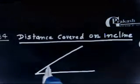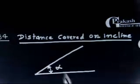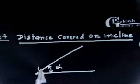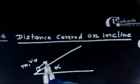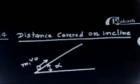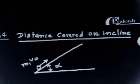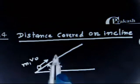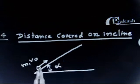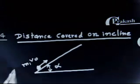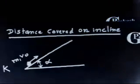This is the inclined plane. It makes an angle alpha with the horizontal. The object of mass m is thrown up with velocity v₀. The friction coefficient is equal to k, so there is friction between the inclined plane and the object. The friction coefficient is k.